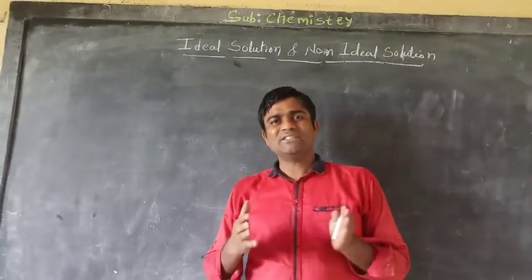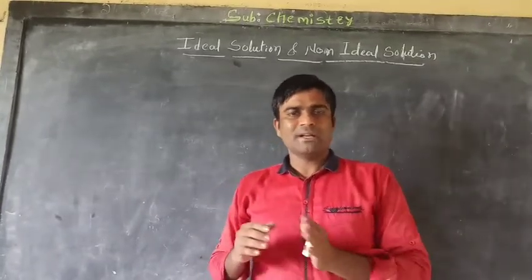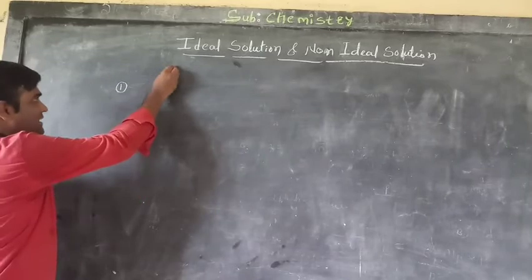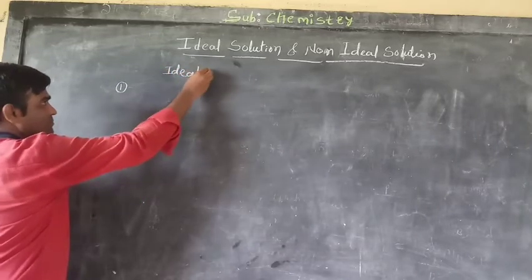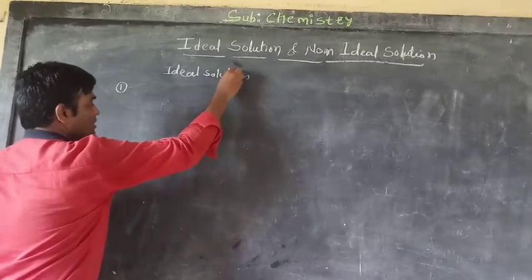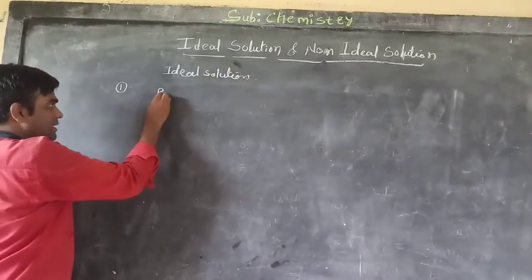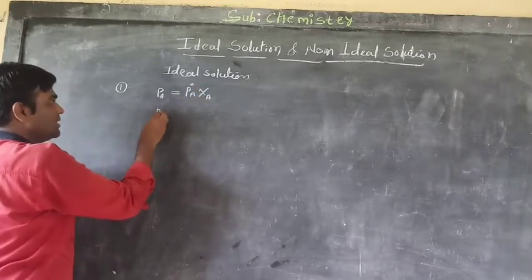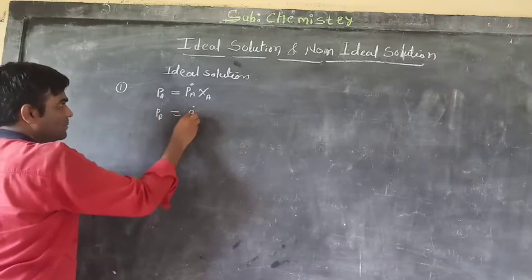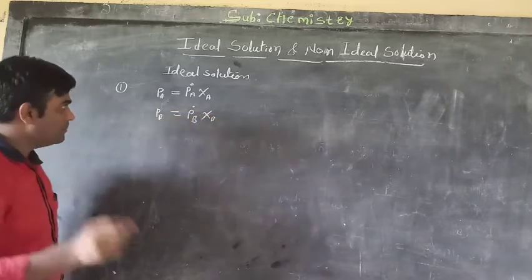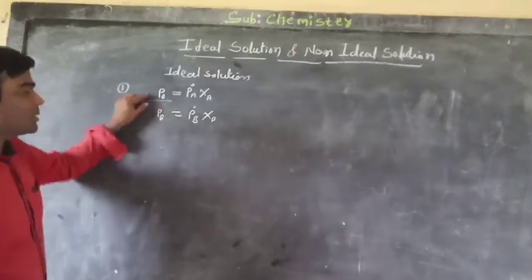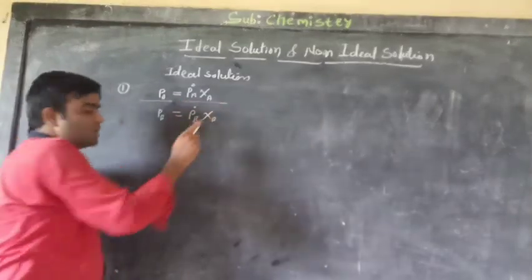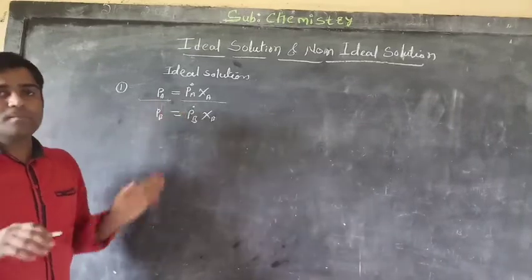Ideal Solution — let's see the conditions necessary for Ideal Solution. First condition: PA = P°A · XA and PB = P°B · XB. This means the vapor pressure of the solvent in the solution is equal to the vapor pressure of the pure solvent multiplied by its mole fraction.